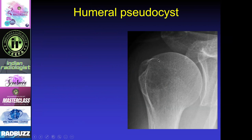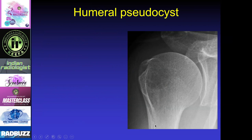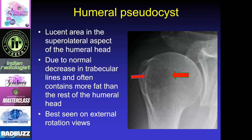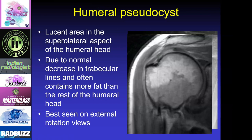If you look at this radiograph, it looks like there's a lesion right here within the lateral aspect of the humeral head, and this can look very suspicious. This is due to a normal decrease in trabecular lines, with usually a little bit more fat in this area of the humeral head, and it's best seen on external rotation views. If you're concerned, you can get an MRI — in that same patient, we can see there's just normal fat in that area, which accounts for that lucency.